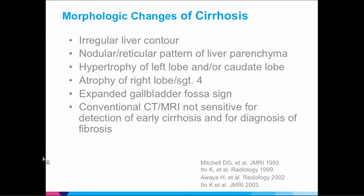For instance, segment four gets atrophied when you have advanced cirrhosis, and you get multiple signs that you can recognize. The problem is that these are really advanced cases. There are always a lot of gray zone cases where you're not sure whether they're F3 or F4. These are the cases that are difficult to diagnose with conventional imaging.